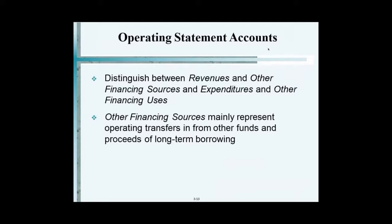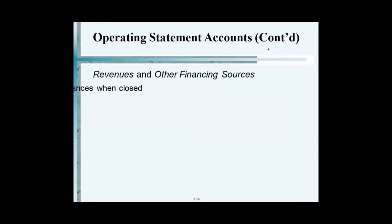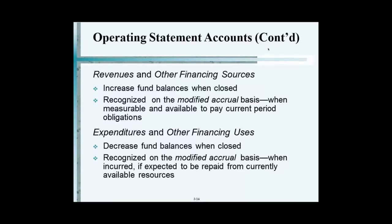The difference between revenues and other financing sources versus expenditures and other financing uses: revenues increase fund balance, and expenditures decrease fund balance. If you have trouble with this, make it even more simple — think of it as cash. When money comes in, it increases your bank account, which is your fund balance. It's not technically that way, but it helps. We use the modified accrual basis of accounting.